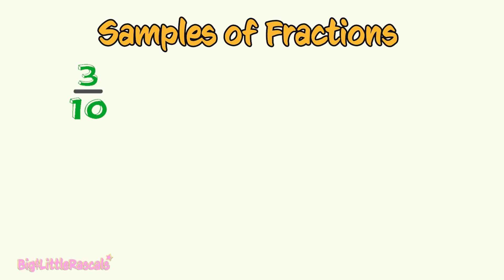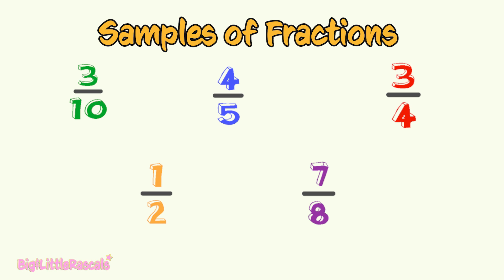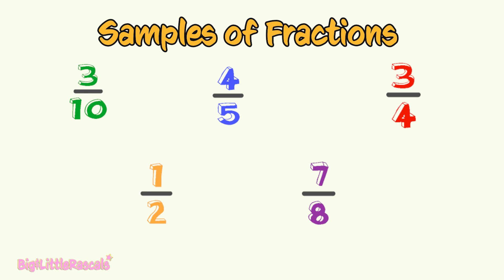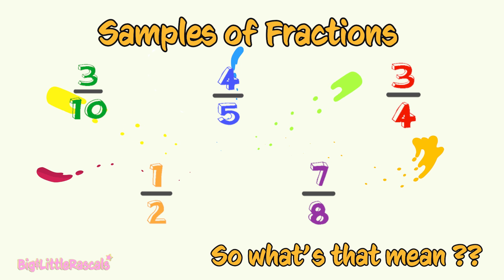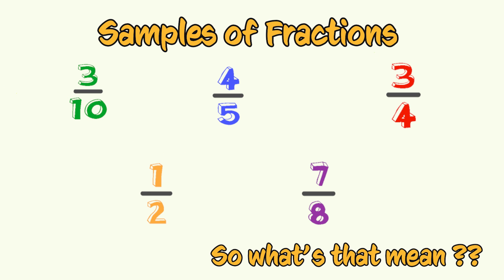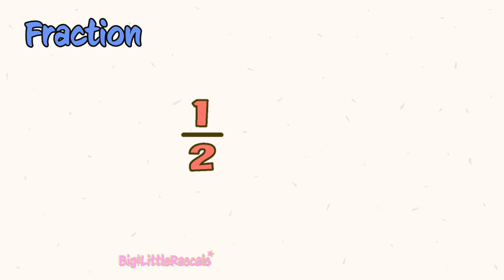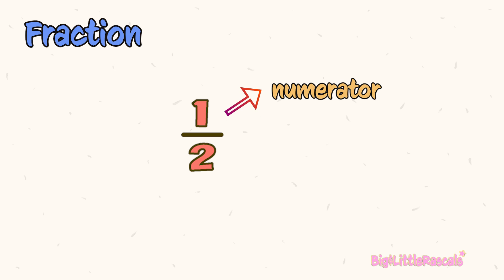Fractions are represented in this kind of numbers. Have you seen these numbers before? Fractions consist of two numbers — one at the top and one at the bottom. The number on the top is called the numerator. The number on the bottom is called the denominator.